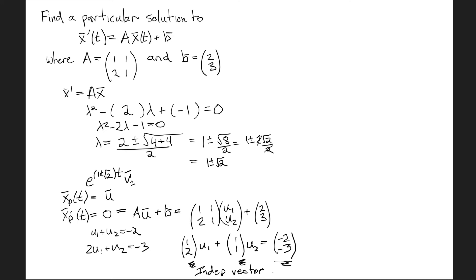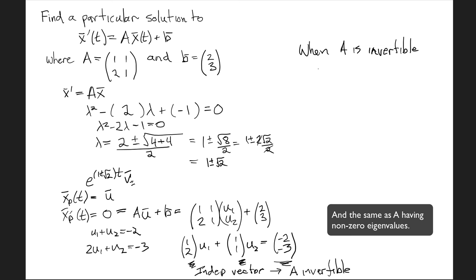Now the columns of A being independent is the same as A being invertible, which is the same as the determinant being non-zero, which we already knew when we calculated the characteristic equation—the determinant was -1. So when A is invertible, or its determinant is non-zero, or its columns are independent, then we can definitely use the guess xp(t) = u. That will definitely work.